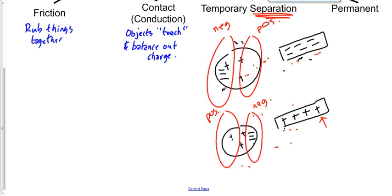Electrons are definitely the ones that move — always, in the context of what we've been discussing. There are exceptions: positive ions can move through air or liquid, and a hydrogen nucleus is just one proton, so in that context a proton could move. But in a solid conductor, it's always going to be the electrons that move.